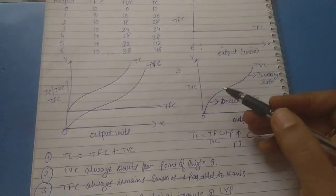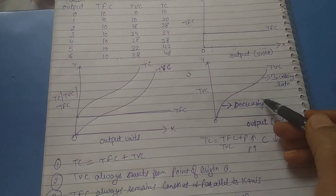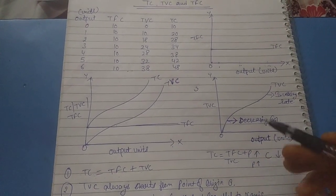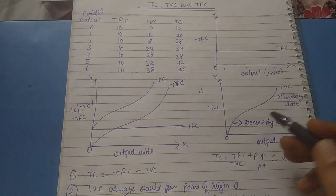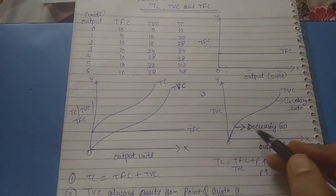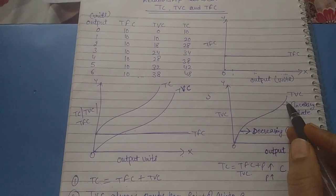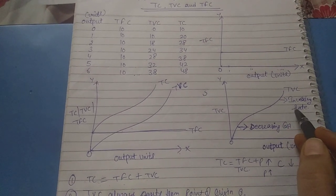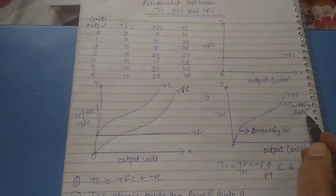The TVC curve is inverse S-shaped. Why? Because of the law of variable proportions — production first increases at an increasing rate, then at a diminishing rate. When production is increasing at an increasing rate, the cost is less, so it is decreasing cost. When production is increasing at a diminishing rate, cost is more, so cost is increasing at an increasing rate.